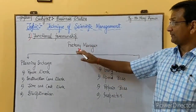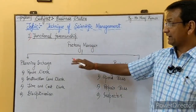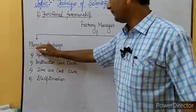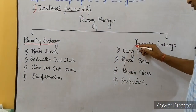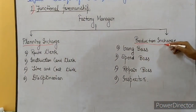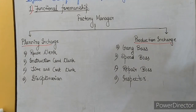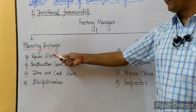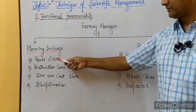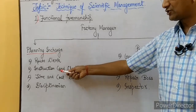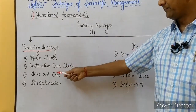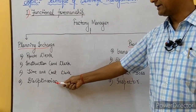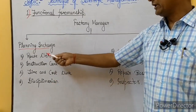Taylor said that the organization has four planning in-charge and four production in-charge. The planning in-charge roles include the route clerk, instruction card clerk, time and cost clerk, and discipline area.